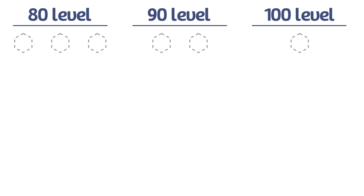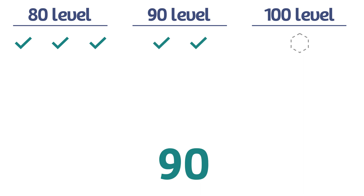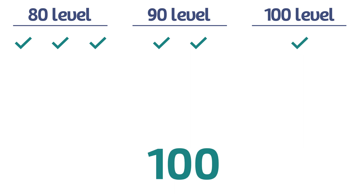How do students earn their grades? In general, students need to get all three 80-level questions correct to make an 80. Then they need to get both 90-level questions correct as well to receive a 90. Finally, they need to get the 100-level question correct in addition to the 80 and 90-level questions to receive a 100. That's the simple formula for grading quizzes, but it leaves us with quite a few questions.